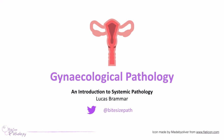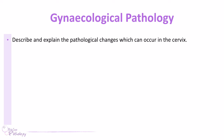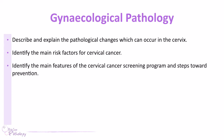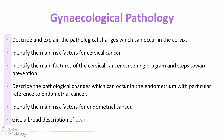So what are we going to cover today? Well, first of all we're going to be describing some of the pathology that takes place in the cervix, and this will lead us on to talking about cervical cancer and the main risk factors. We're then going to identify some of the main features of cervical cancer screening and the steps towards preventing it. We'll talk about endometrial pathology and endometrial cancer, and finally we'll talk very broadly about ovarian tumours and ovarian cancer and its risk factors.